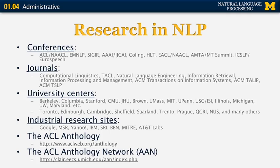The best place to find papers in NLP is the ACL Anthology, available through the ACL website. It was created more than ten years ago by Steven Bird and is now managed by Min-Yen Kan from the National University of Singapore. It has more than 20,000 research papers across all subfields of computational linguistics and NLP. There is also an experimental website called the ACL Anthology Network, developed at the University of Michigan, which includes citation data and citing sentences — you can find which papers have been cited the most and what text was used to cite them.